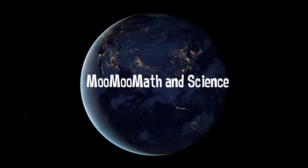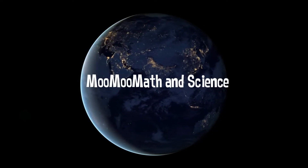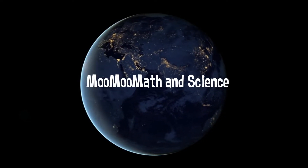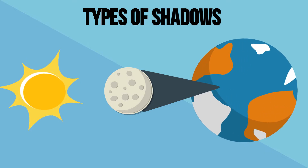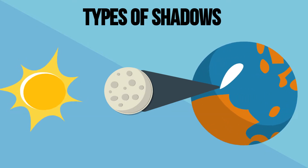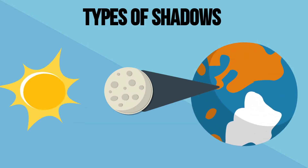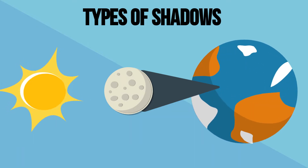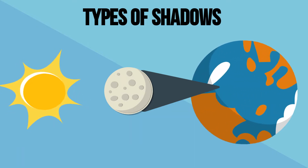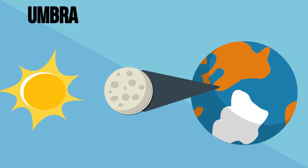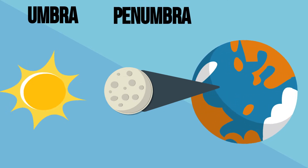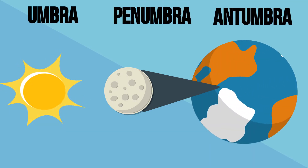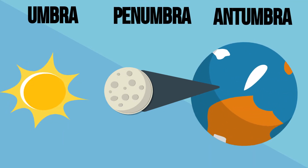Welcome to MooMooMath and Science. In this video I'd like to talk about types of shadows created by celestial bodies. I will review the Umbra, Penumbra, and Antumbra.